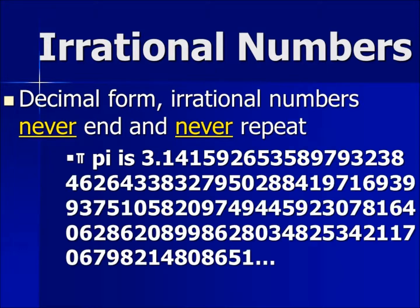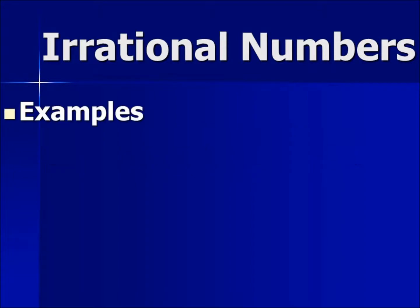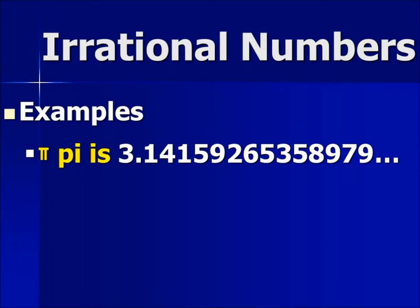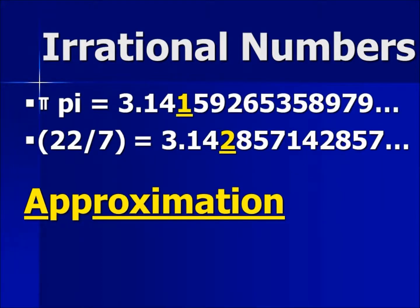Okay, you get the point. We cannot put an infinite number into a calculator, so we will get close with an approximation of pi. Here we have two approximations for pi. The first is a decimal and the second is a fraction. As you can see, our approximations are good for the first three digits.